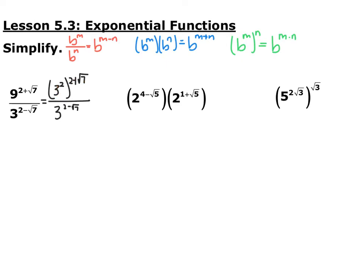9 is the same thing as 3 squared, so we can write this as 3 squared to the 2 plus root 7, and then apply this rule. So we have 3 to the 4 plus 2 root 7. Make sure you distribute that 2 to both the 2 and the root 7. So you have 3 to a power divided by 3 to a power, so now you can apply this rule. Go ahead and pause the video and simplify this.